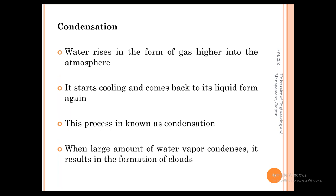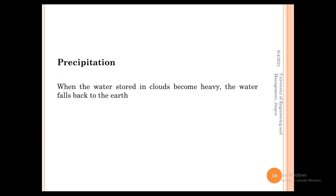The next step is condensation — the process in which water rises in the form of gas higher into the atmosphere, then starts cooling and comes back to its original liquid form. This change of state from gas to liquid is known as condensation. When a large amount of water vapor condenses, it results in the formation of clouds. The last step is precipitation — when the water stored in a cloud becomes very heavy, the water falls back to the earth.